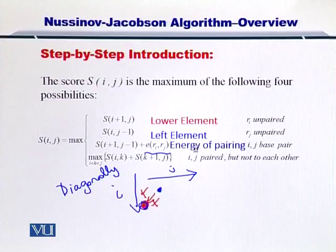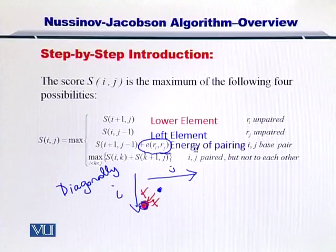As I just mentioned, that you have to take the maximum from the left, from the bottom and from the diagonal elements. But the diagonal element, if it is matching and coupling with the nucleotide, then you have to consider the energy that is released as a result of the formation of the hydrogen bond. So that is represented here by E.